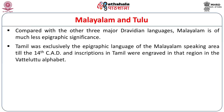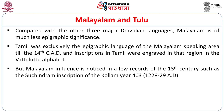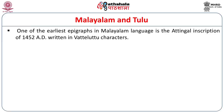Tamil was exclusively the epigraphic language of the Malayalam-speaking area till the end of the 14th century AD, and inscriptions in Tamil were engraved in that region in the Vatteluttu alphabet. But Malayalam influences are noticed in a few records of the 13th century. The first one is the Suchindram inscription of Kollam year 403, equivalent to 1228–29 AD, one of the earliest Malayalam inscriptions. One of the earliest epigraphs in Malayalam is the Athinengal inscription dated 1452 AD, written in Vatteluttu characters. From Vatteluttu, the modern Malayalam script originated.